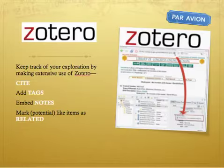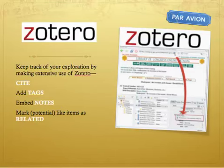This is where Zotero becomes so important, as you'll remember from the lecture. Hopefully as you've been doing your digging around, you've kept track of your exploration by making extensive use of Zotero or some other way of citing. Zotero allows you to cite, to add some tags, to embed some notes, to mark potential items as related. Whatever you use, keep careful watch on the many options available to you and the ones with the greatest potential for your research and composing.